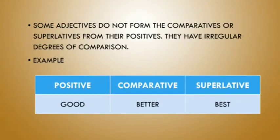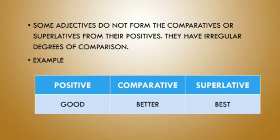Some adjectives do not form their comparatives or superlatives from their positives. They have irregular degrees of comparison. For example, 'good' — there are adjectives which do not form the comparative or superlative from their positive forms. 'Good' is converted to comparative as 'better' and then to superlative as 'best.' There is no relation of 'better' and 'best' with the word 'good' — it changes its form totally. So they have irregular degrees of comparison with no relation to the positive form.